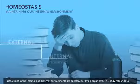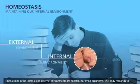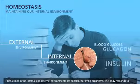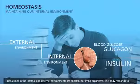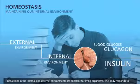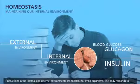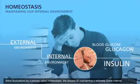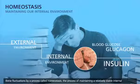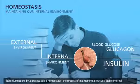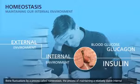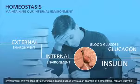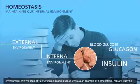Fluctuations in the internal and external environments are constant for living organisms. The body responds to these fluctuations by a process called homeostasis — the process of maintaining a relatively stable internal environment.